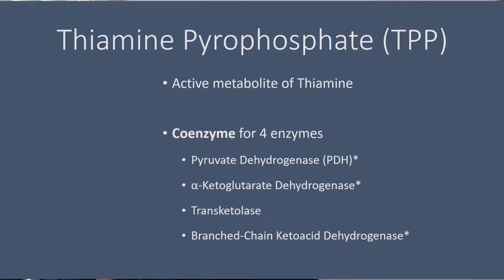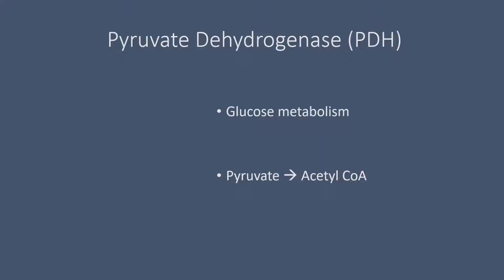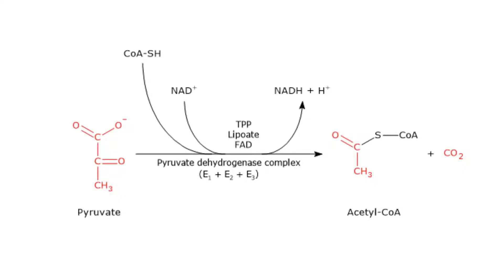Notice there are asterisks beside pyruvate dehydrogenase, alpha-ketoglutarate dehydrogenase, and branched-chain ketoacid dehydrogenase. Those asterisks indicate these three enzymes are what we call TLCFN enzymes — meaning all three, and only these three, require the same five coenzymes: T for TPP, L for lipoic acid, C for CoA, F for FAD, and N for NAD.